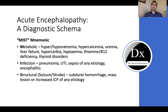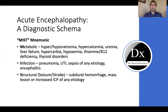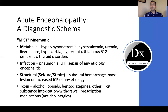S stands for structural and also seizure — either someone is actively seizing or they are postictal — and stroke. It takes a pretty specific area of the brain to have a stroke that causes acute encephalopathy, but other structural causes include subdural hemorrhage, mass lesions, and increased intracranial pressure of any etiology. T stands for toxins: alcohol, opioids, benzos, other illicit substance intoxication or withdrawal, prescription medications, and over-the-counter medications — with anticholinergic meds being particularly bad actors in this arena.